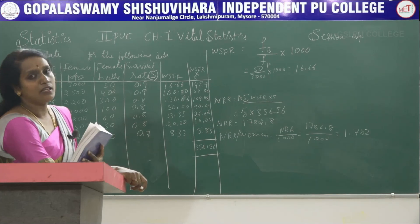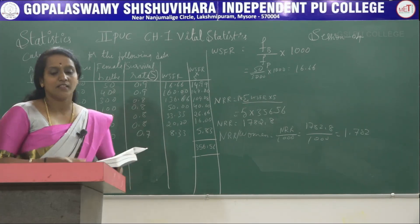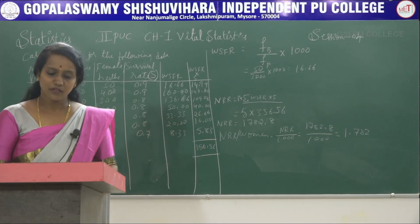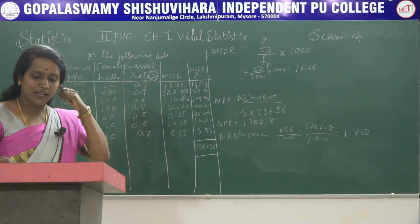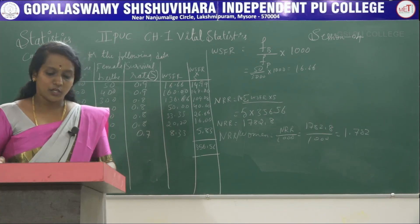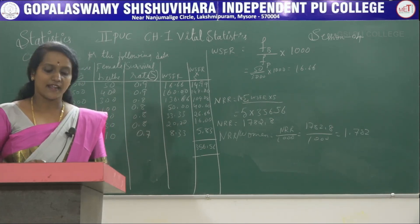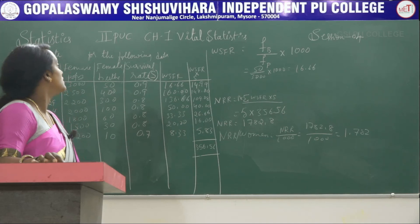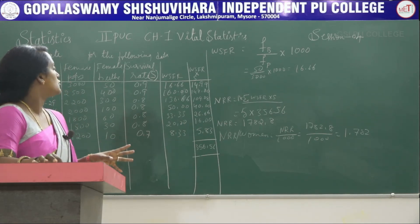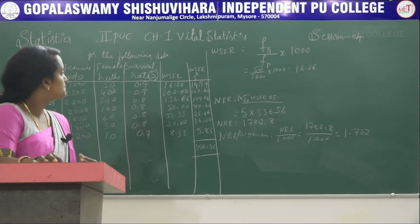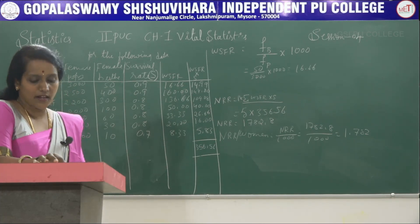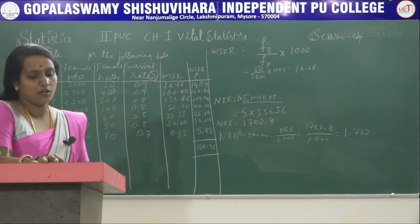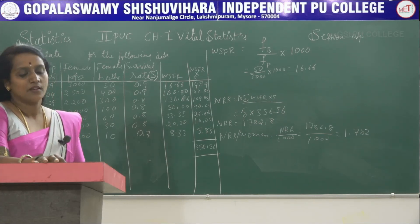Since NRR per woman is 1.782, which is greater than 1, the population is increasing. If the value is less than 1, the population would be decreasing. This is all about NRR and GRR. In examinations, they will ask you to calculate both NRR and GRR together for 10 marks. This is the procedure to find GRR and NRR. Next class we will discuss another topic in vital statistics. Thank you.